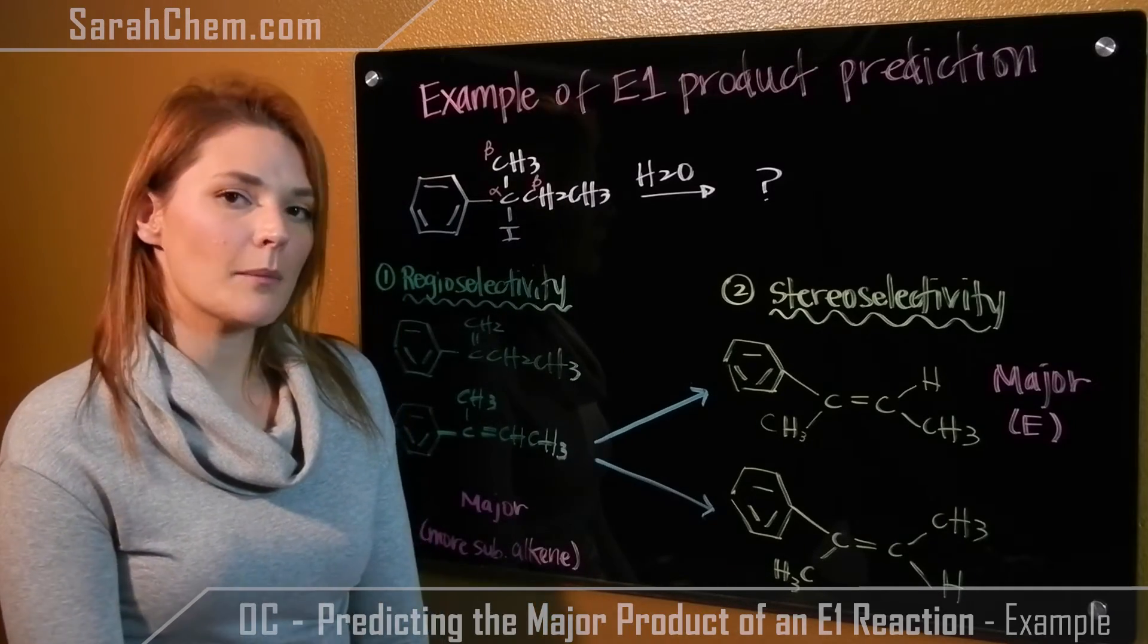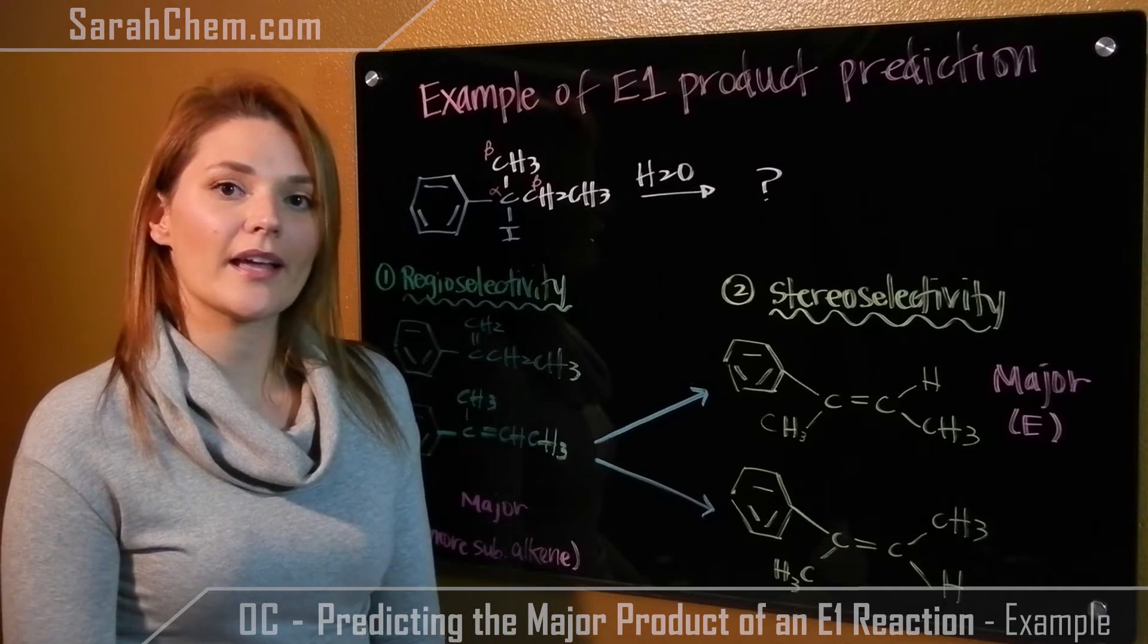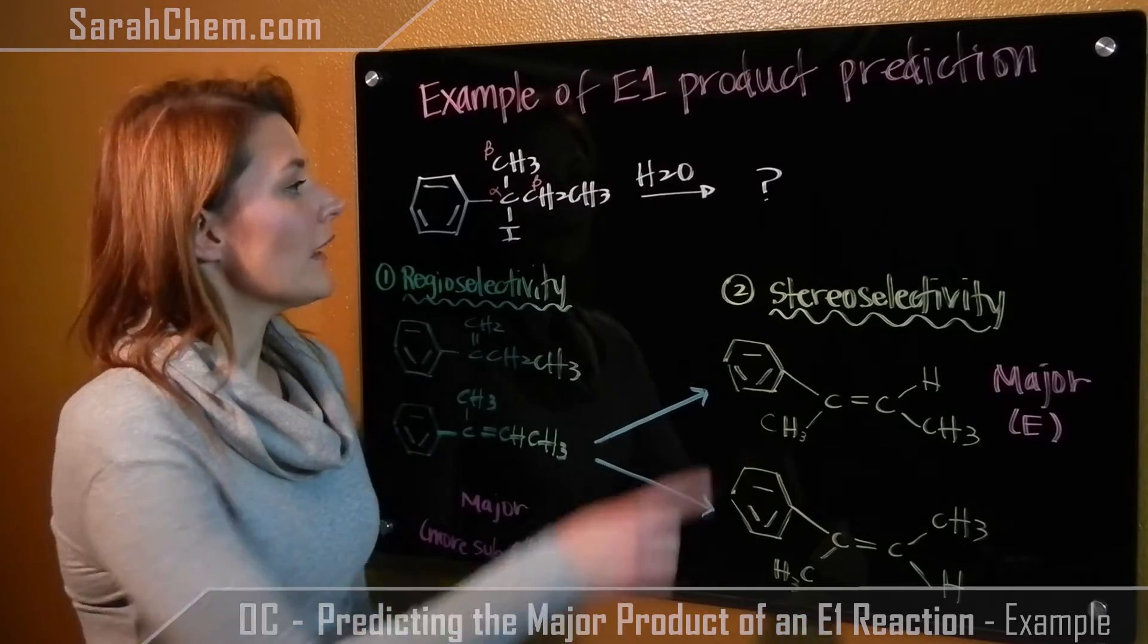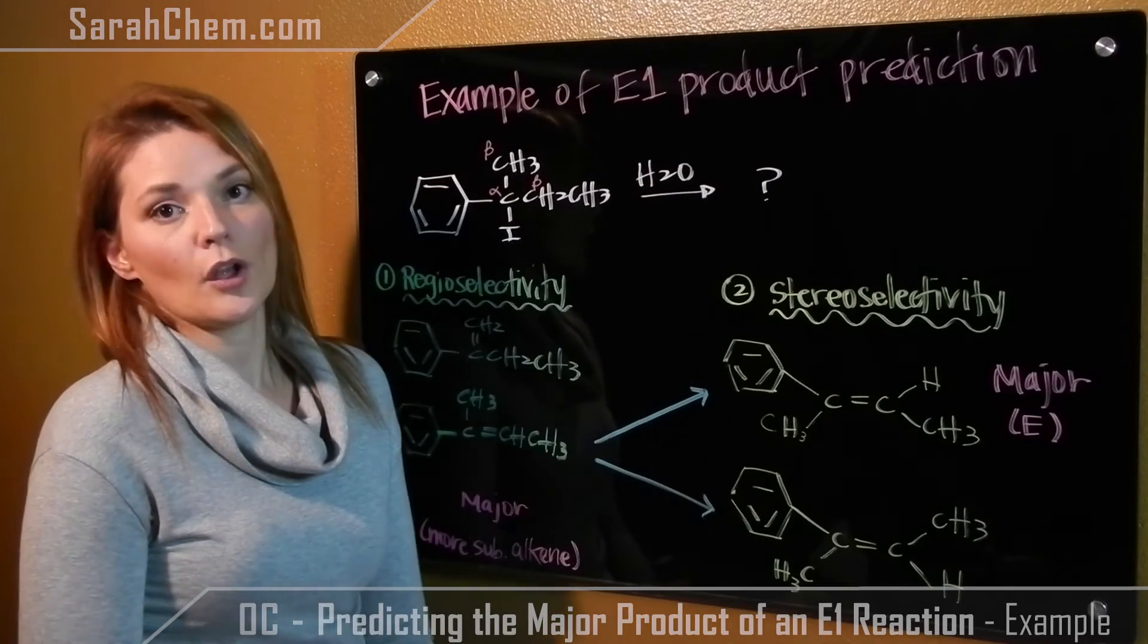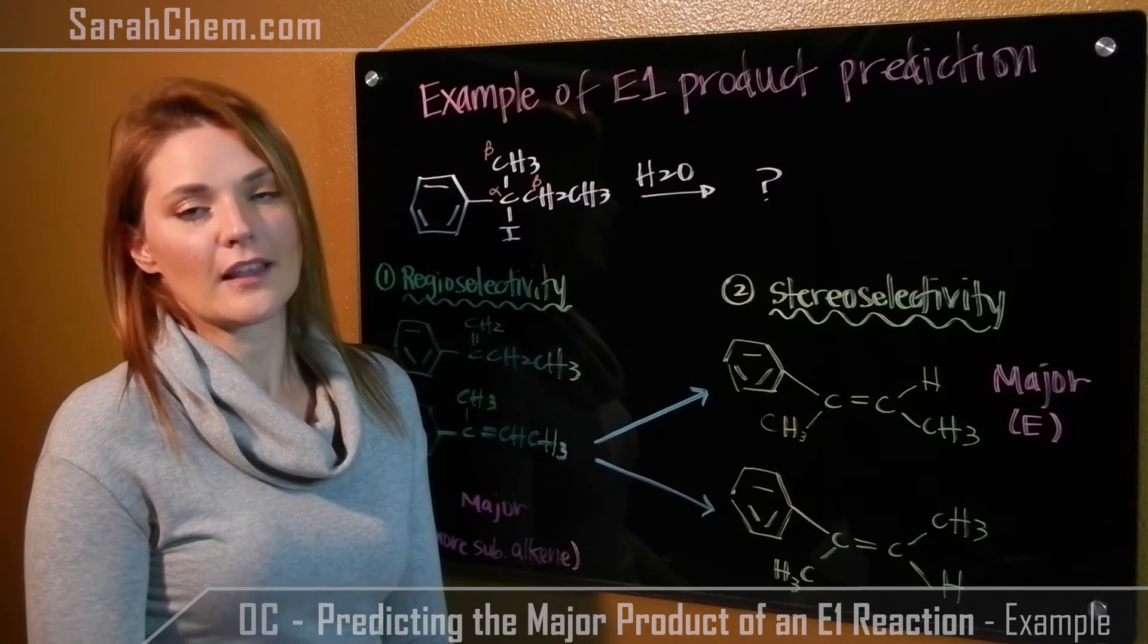That doesn't automatically mean that you're going to deal with an E1. It could be E2. So the next thing you look at is the type of base that you're using. In this case, we've been given water. Water is a weak base, and weak bases prefer or favor the E1 reaction.